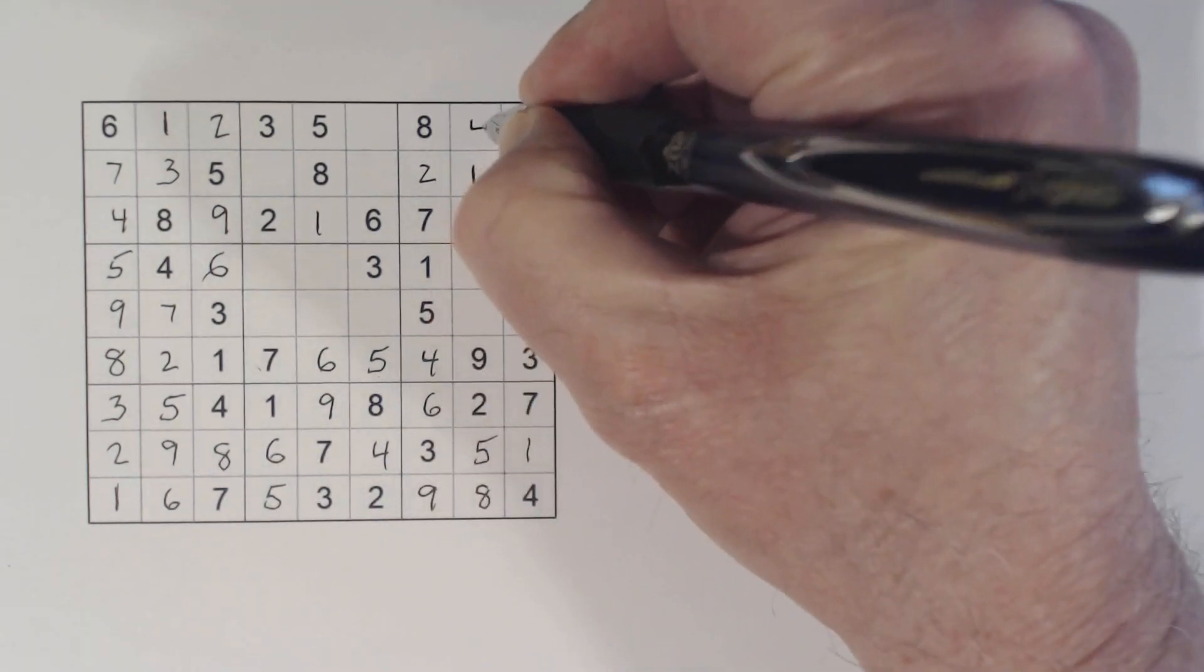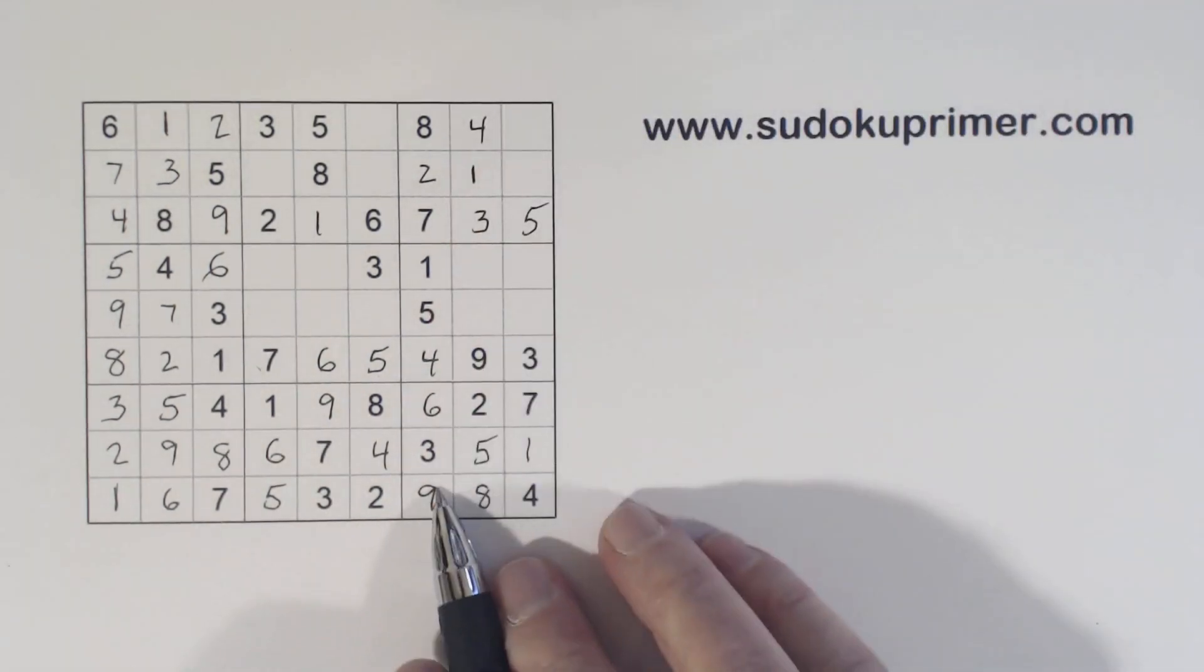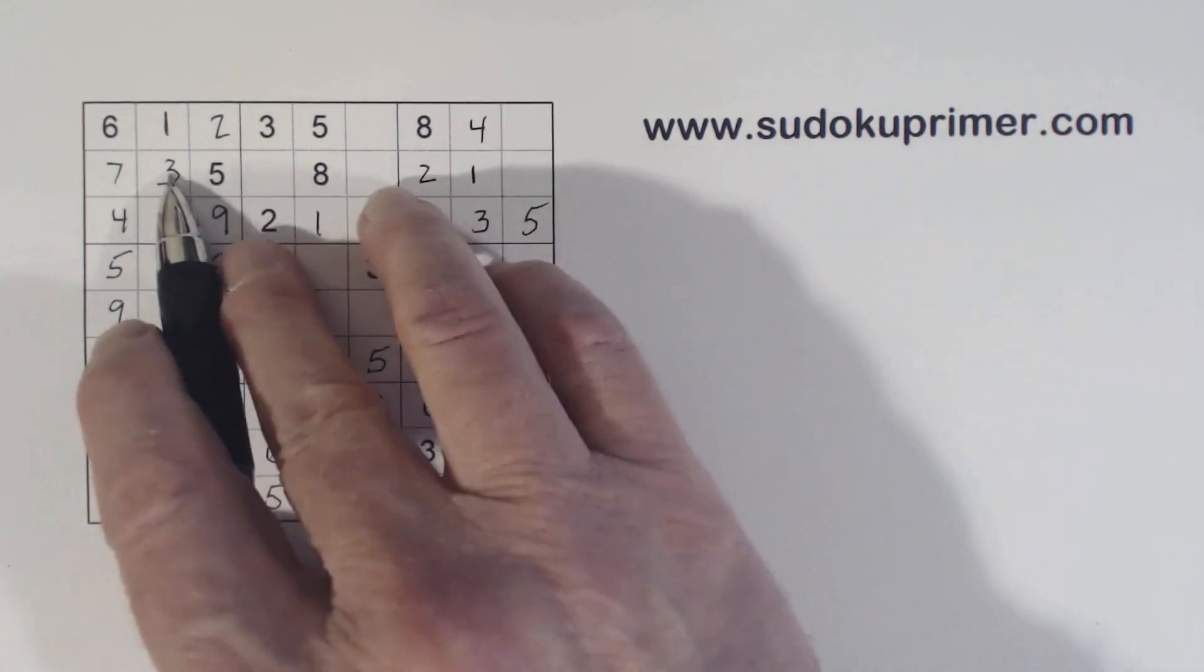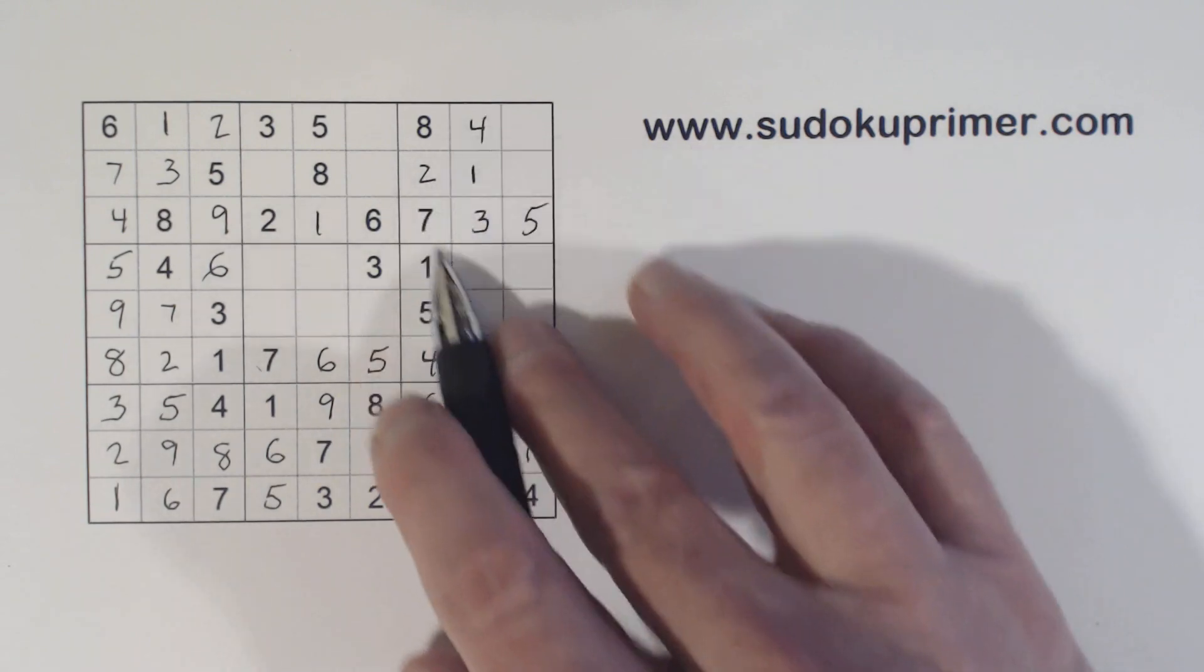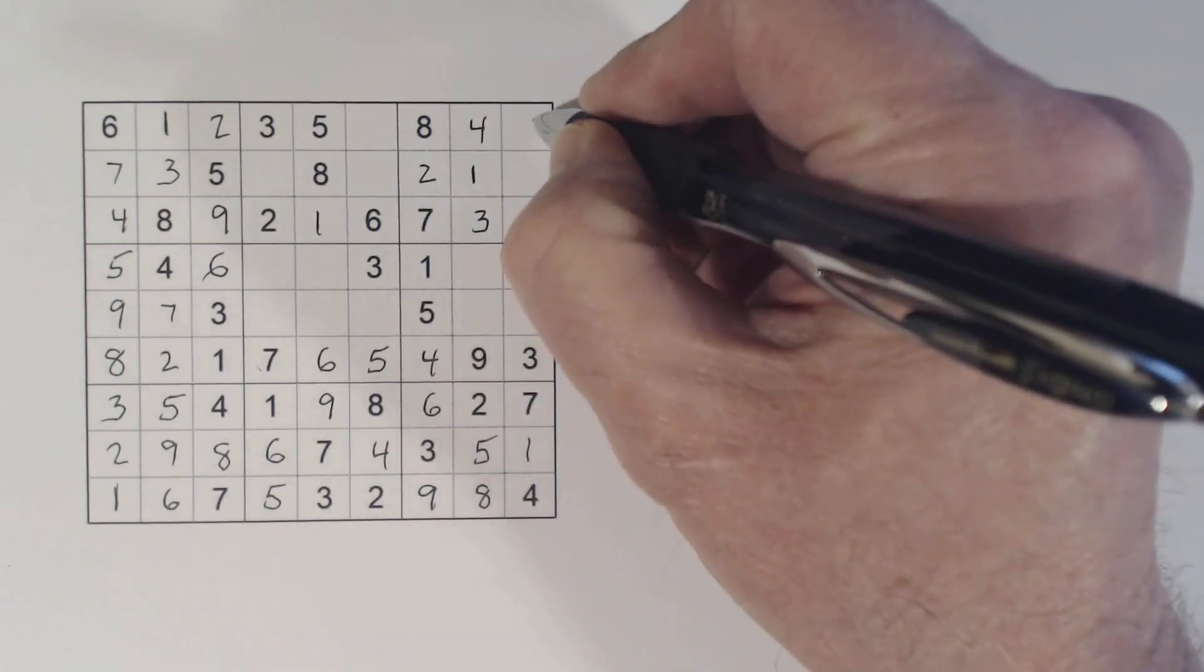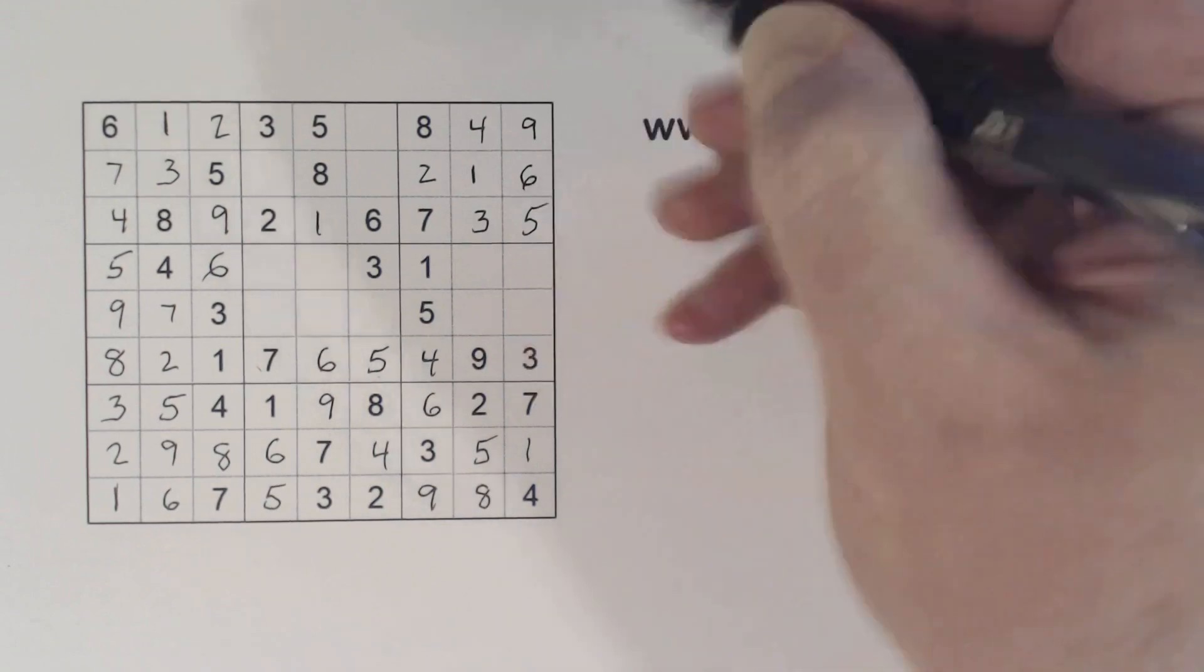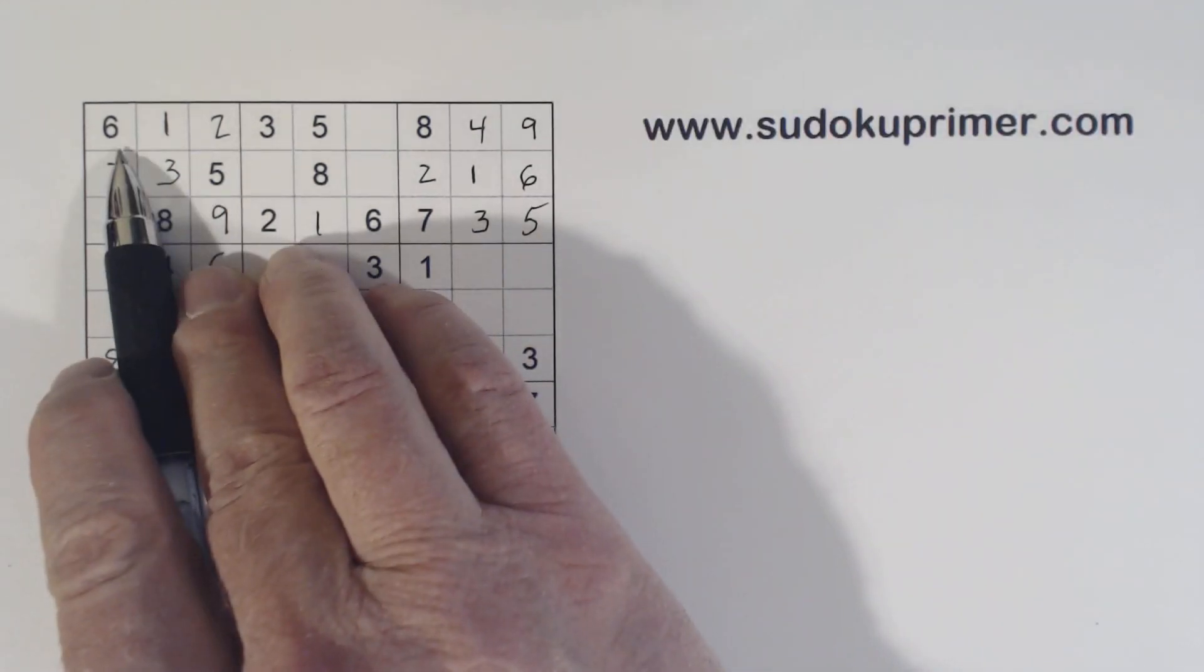That makes that a 4 right there. And we've got 9, 9. Let's see, what are we missing there? 9, 6 and 9 right there. We can fill those in because of that 6 right there.